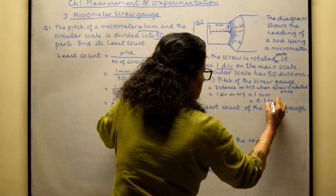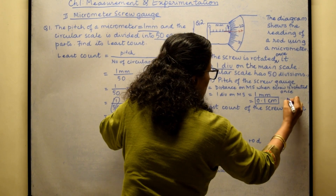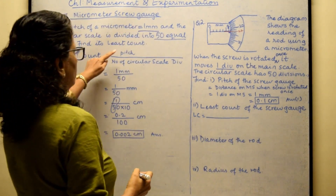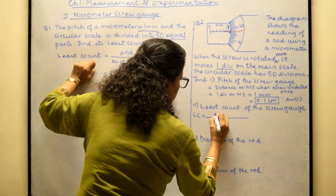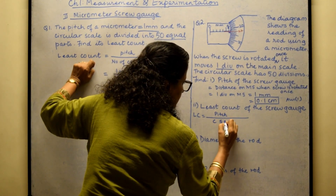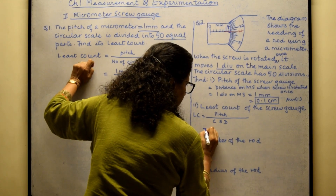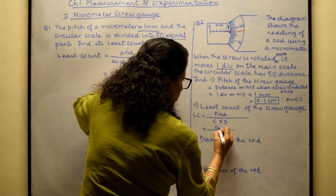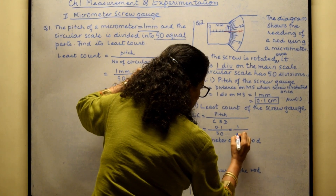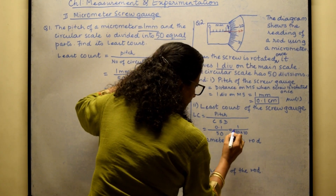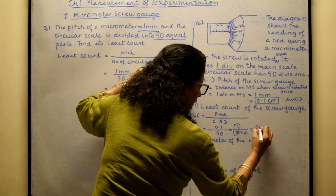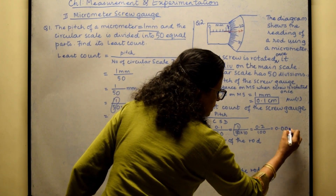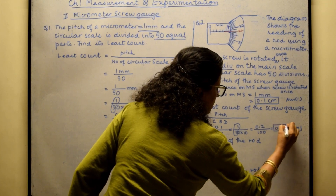Now for the least count: it is pitch divided by the number of circular scale divisions. There are 50 circular scale divisions and the pitch is 0.1 centimeter, so it becomes 0.1 divided by 50, which gives 0.002 centimeter. This is our least count.